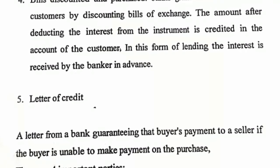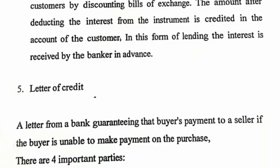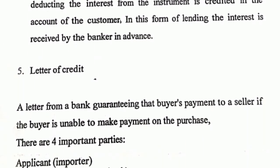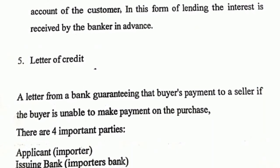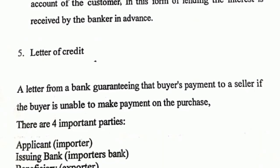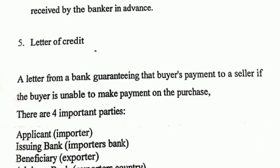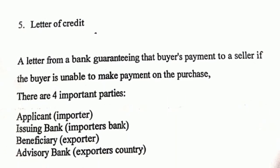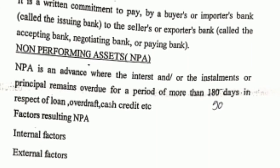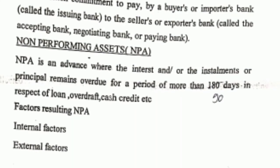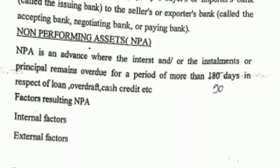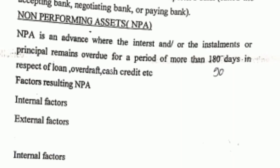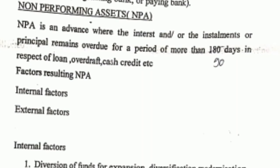Now let us know what is a non-performing asset (NPA). A non-performing asset is an advance where the interest and installments or the principal remains overdue. If I have an asset but I do not receive value from it, that is a non-performing asset — overdue for a period of 90 days. Note: it is not 180 days, it is 90 days. For example, if I as a bank gave a loan to Mr. X and Mr. X is not able to repay that loan, that amount becomes a non-performing asset for me.